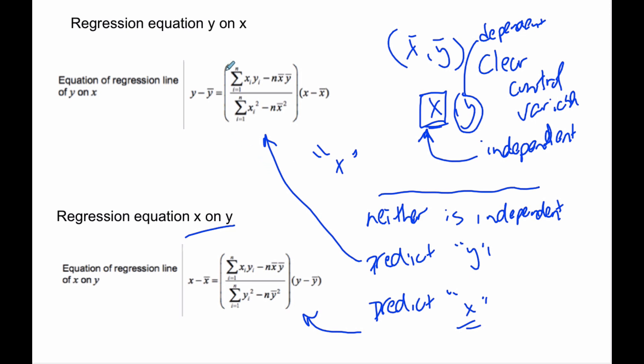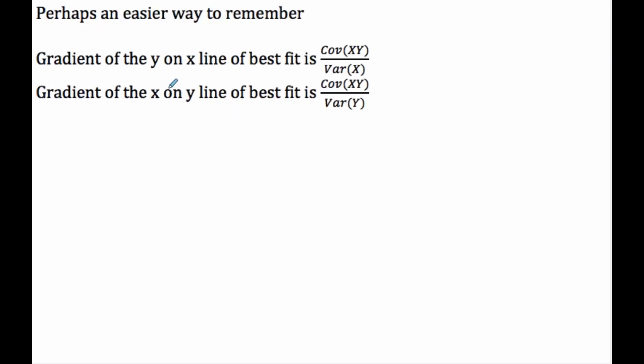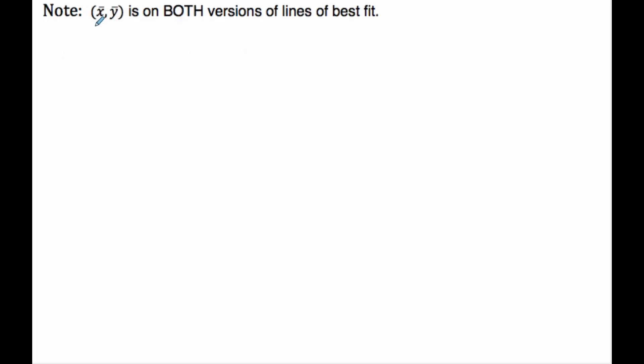Now, the slope is this mess, which might be easier to see. The gradient of Y on X line is the covariance over the variance of X. So remember, it's delta Y over delta X. And this is the Y and the X typically. Well, this one, if I'm doing X on Y, well, this is kind of turning into our X value as such. And so it's X on Y, and so it's the variance over Y. And the other thing to remember is that both versions have X bar, Y bar on the line of best fit.